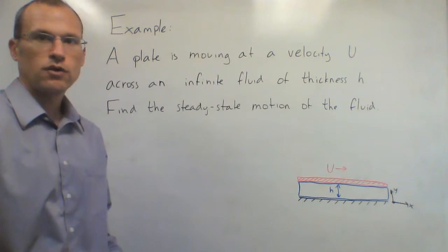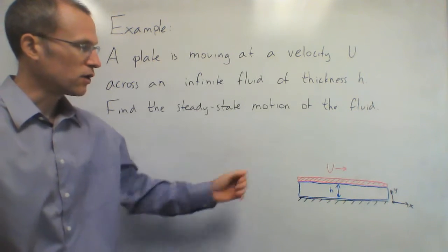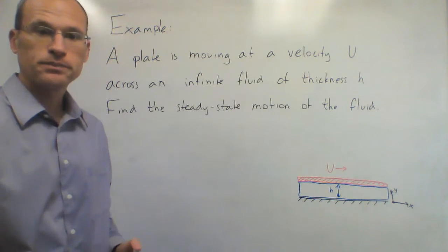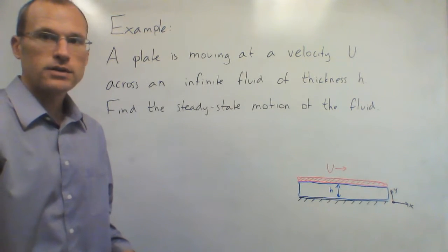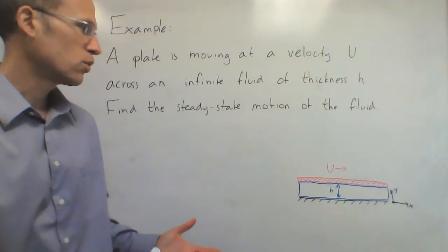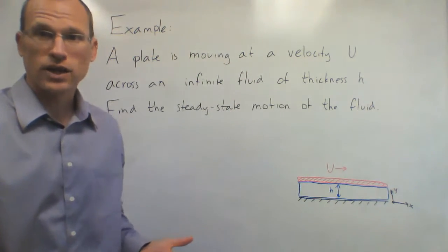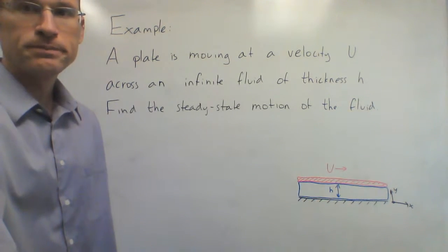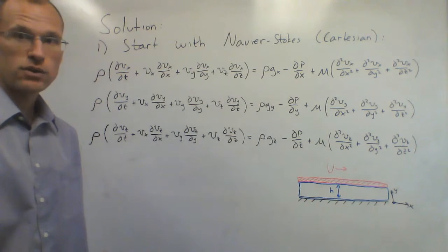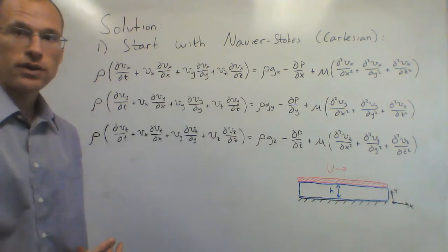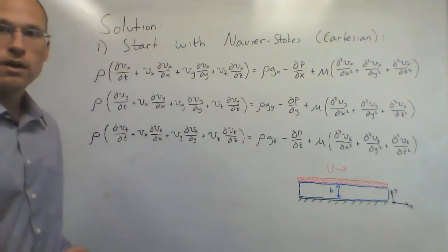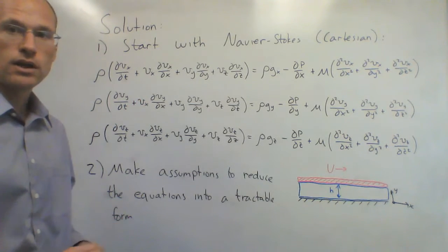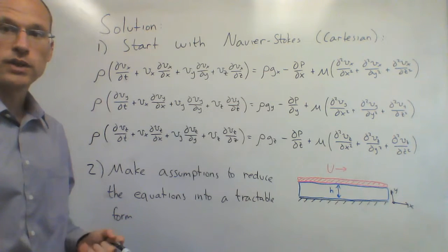Here's an example: a plate moving across a fluid of thickness h, with the plate moving at velocity U. We want to find the steady-state motion of the fluid. I'll choose my coordinate system with x to the right and y going up — standard Cartesian coordinates. The first step is to start with the full Cartesian Navier-Stokes equations. The next step is to simplify those equations using our assumptions to get a form we can actually solve.